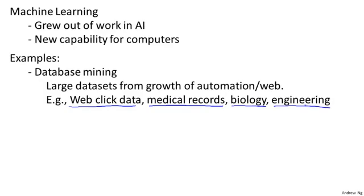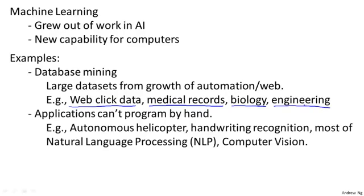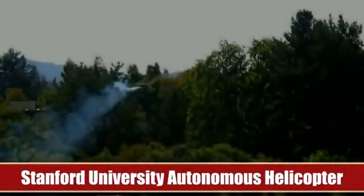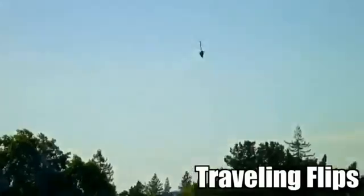A second range of machine learning applications is ones that we cannot program by hand. For example, I've worked on autonomous helicopters for many years. We just did not know how to write a computer program to make this helicopter fly by itself. The only thing that worked was to have a computer learn by itself how to fly this helicopter.